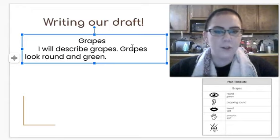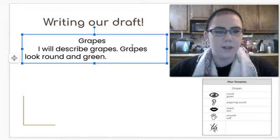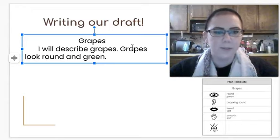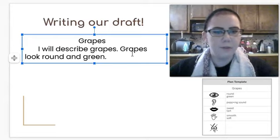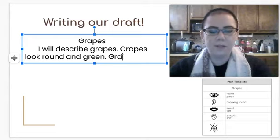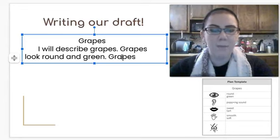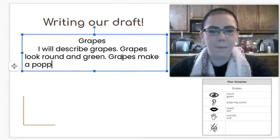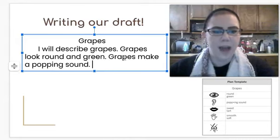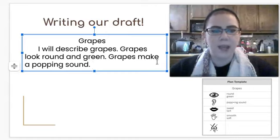If you had another description for what they looked like, you can add one more sentence here, or you can add some more words if you wanted to add purple. I know we talked about they can be purple sometimes. The next part is going to say what they sound like. So we said popping sound. That was what was in our chart. So grapes, let's say, make a popping sound. And I'm copying that right off my chart. Popping sound. Grapes make a popping sound. If you have something else, a different word to describe what they sound like, you can put that there.